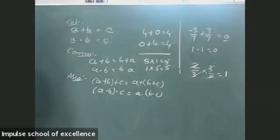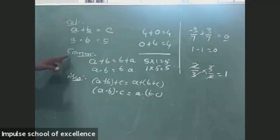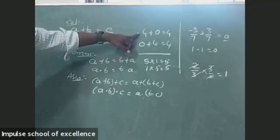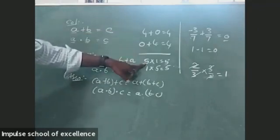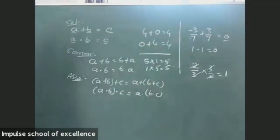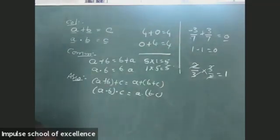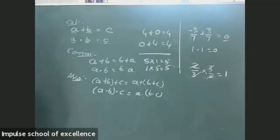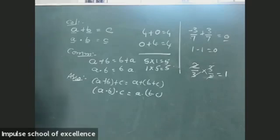So these are the properties we have: closure property, commutative property, associative property, additive identity, multiplicative identity, additive inverse, and multiplicative inverse. After that, we have the fundamental operations on logarithms, which we will discuss.